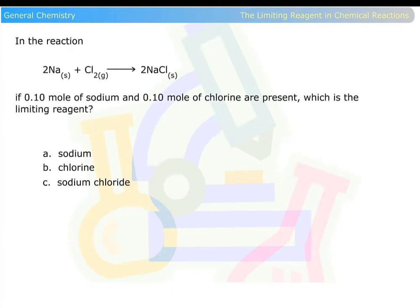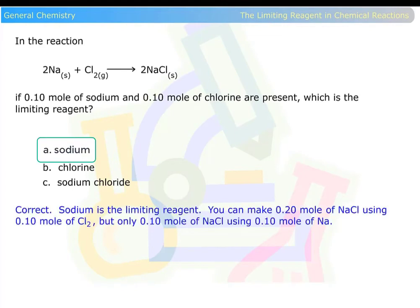In the reaction, sodium plus chlorine is equal to sodium chloride. If 0.1 mole of sodium and 0.1 mole of chlorine are present, which is the limiting reagent? Sodium is the limiting reagent. You can make 0.2 mole of sodium chloride using 0.1 mole of chlorine, but only 0.1 mole of sodium chloride using 0.1 mole of sodium.